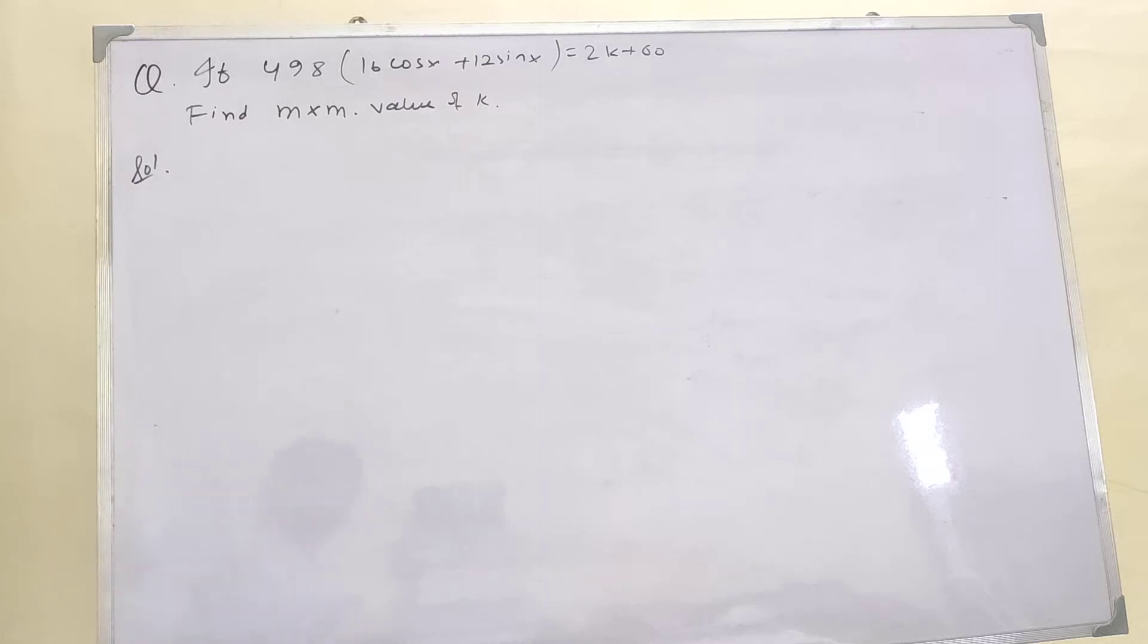Hello guys, welcome to a new video. In this question, if 498 into (16 cos x plus 12 sin x) is equal to 2k plus 60, we have to find the maximum value of k. Please give it a try, otherwise you can see my solution.